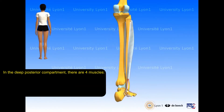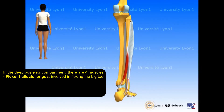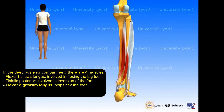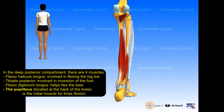In the deep posterior compartment, there are four muscles. Flexor hallucis longus, involved in flexing the big toe. Tibialis posterior, involved in inversion of the foot. Flexor digitorum longus, which helps flex the toes. The popliteus, located at the back of the knee, is the initial muscle for knee flexion.